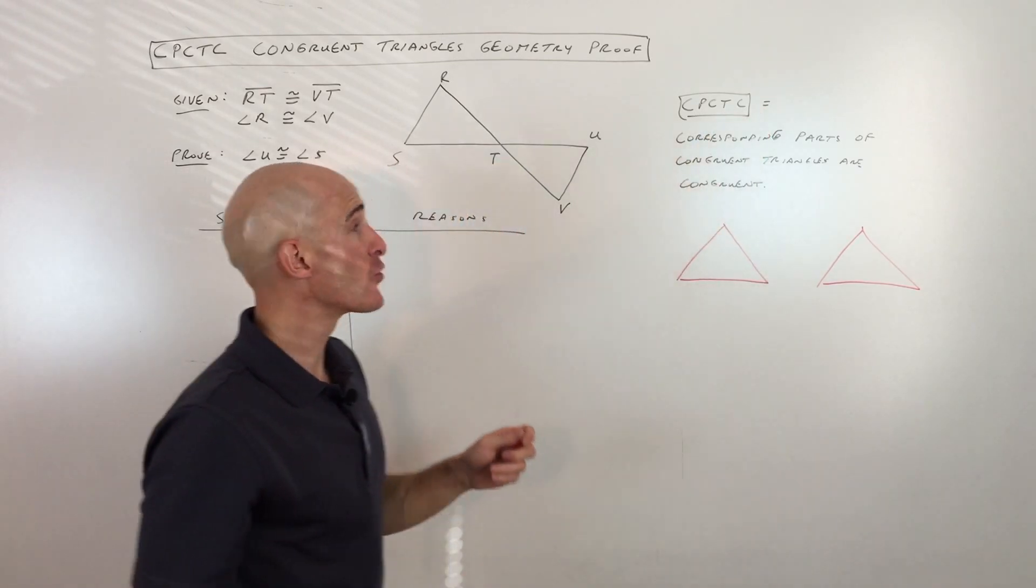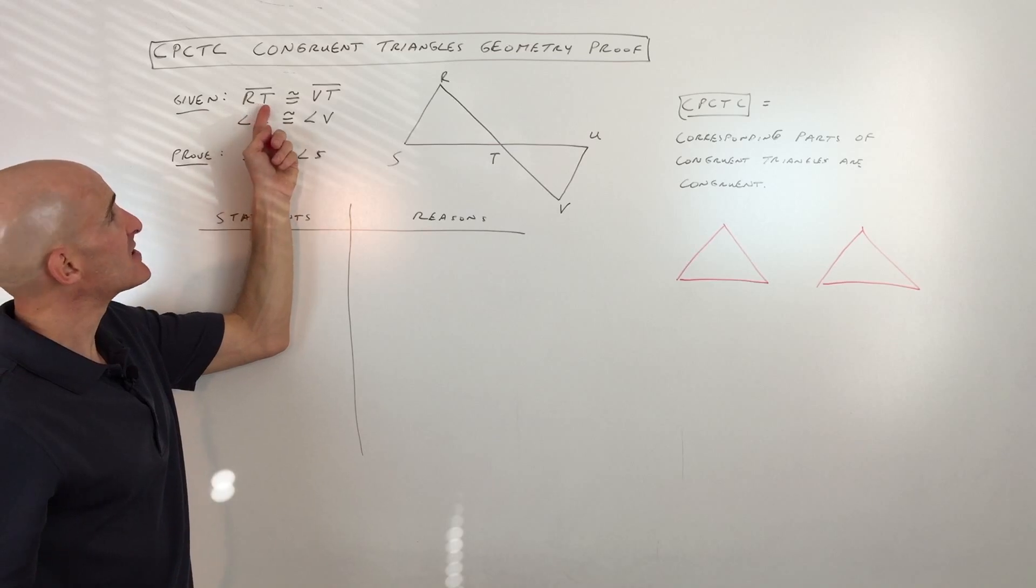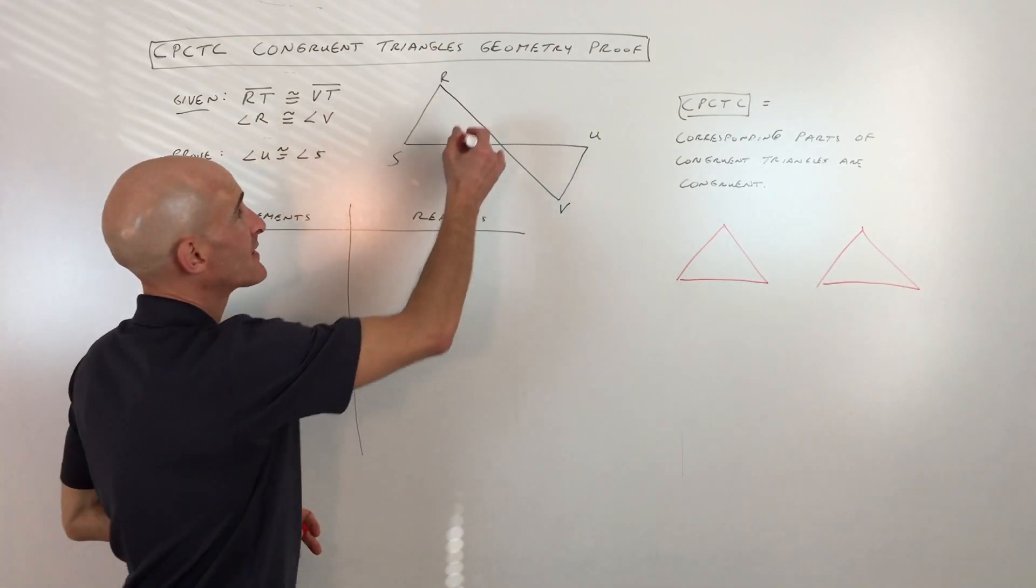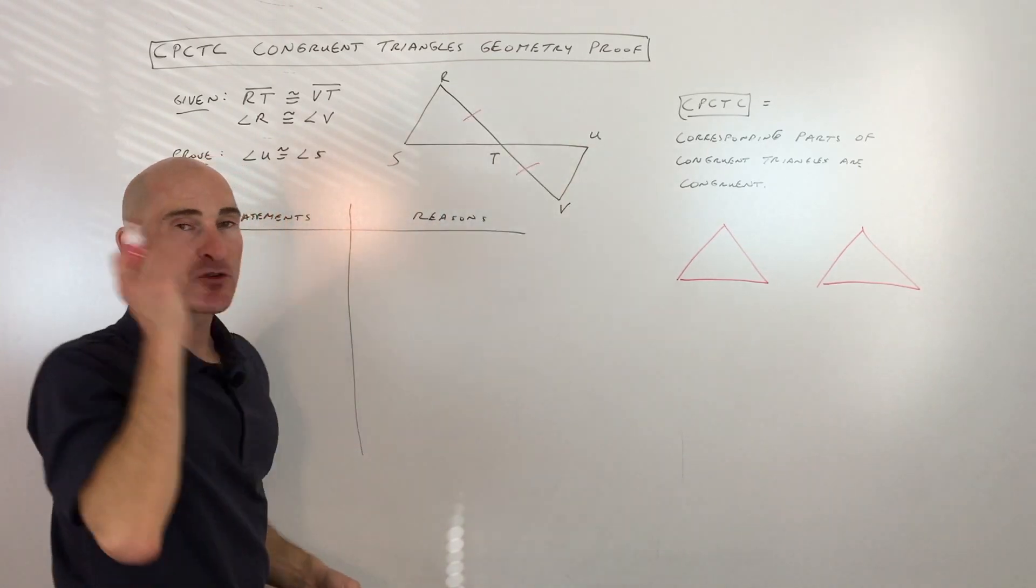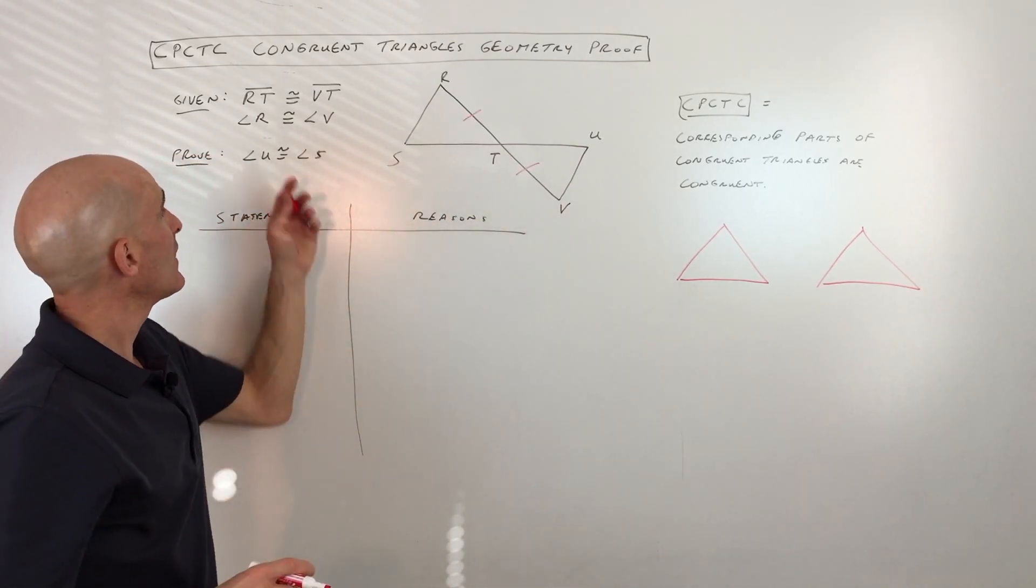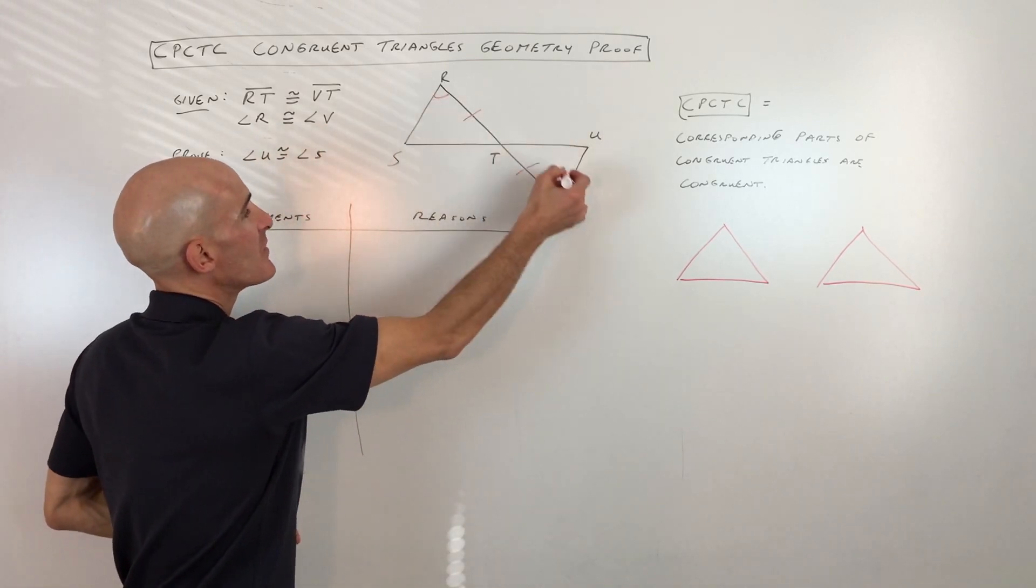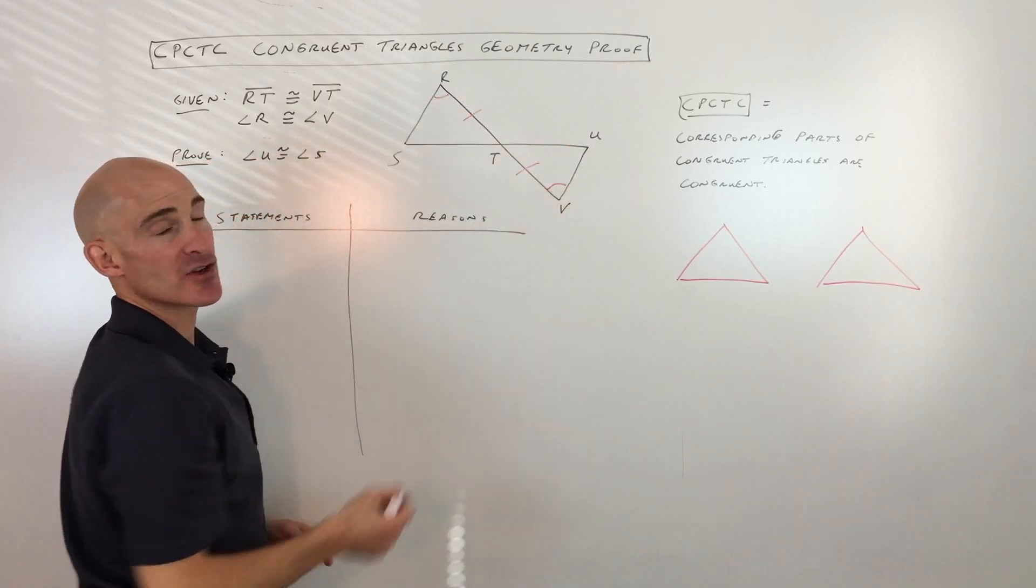Okay, so in this proof, they're giving us some hints here. They're telling us that segment RT is congruent to segment VT, and what I like to do is I like to just mark it on the diagram so I don't have to remember it in my mind. I can just see it visually. And they also tell us that angle R is congruent to angle V. So again, I'm just going to make a little mark here to show that these two angles are congruent.